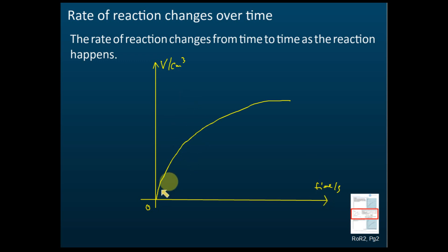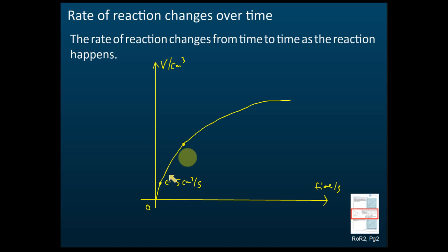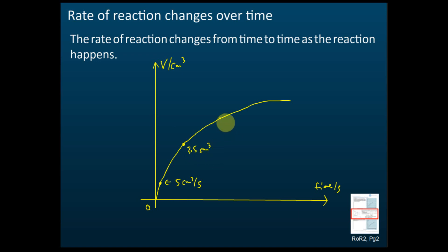From the graph we can see that the rate of reactions decreases over time. At an early point the rate of reaction is, say, 5 cm³ per second. If you find the rate at a later point, the gradient there is lower — here the graph is steeper, and later it is flatter.